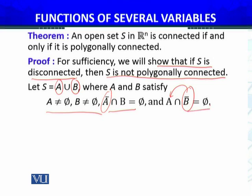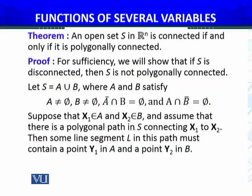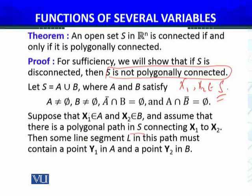Suppose that X₁ belongs to A and X₂ belongs to B and assume that there is a polygonal path. S is not polygonally connected. Suppose for contradiction that there is a polygonal path in S connecting X₁ to X₂. Then some line segment L in this path must contain a point Y₁ in A and a point Y₂ in B.